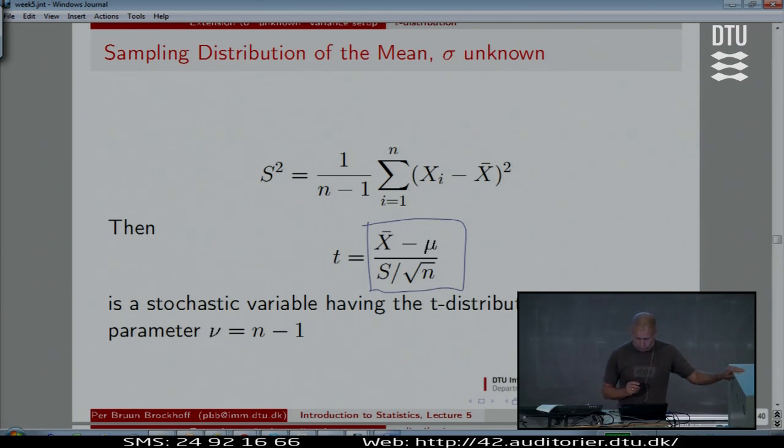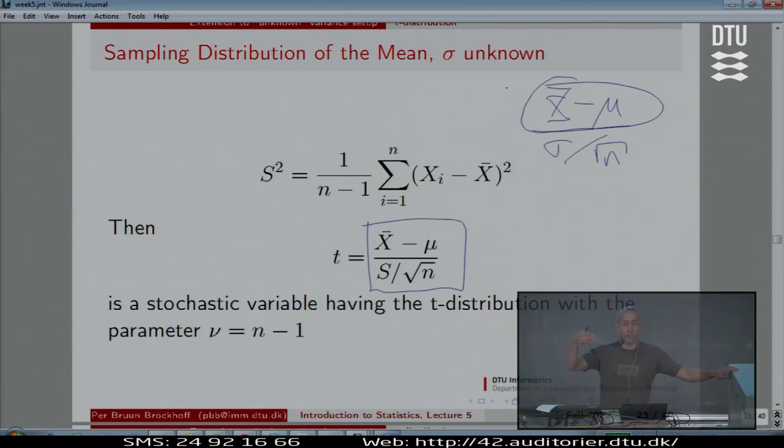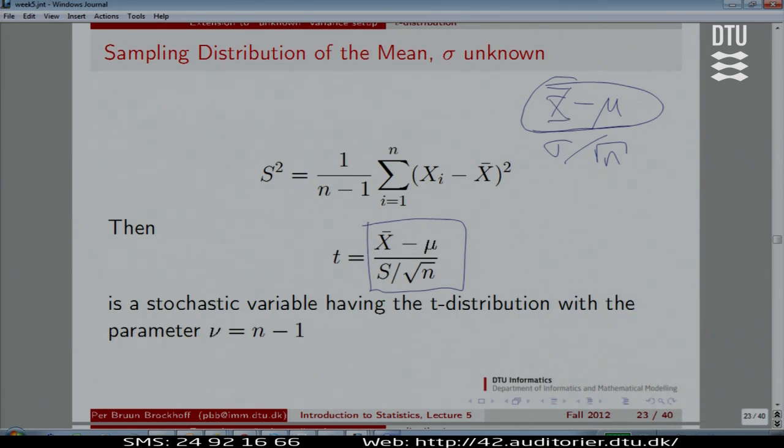The construction from before looked like this, X̄ minus μ over sigma root N. Why do we look at this? This is because this is the mistake we are making. This is the error. This is the difference between what we compute and the truth. X̄ is going to be used to infer about μ. X̄ is going to be the estimate of μ. So we should be concerned with how far away from μ is X̄. X̄ minus μ, that's the difference. It's a deviation between what I use and the truth.